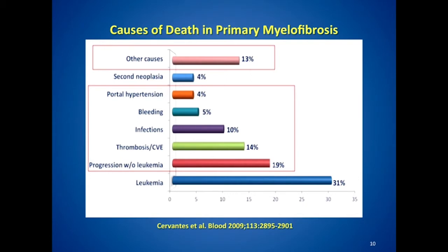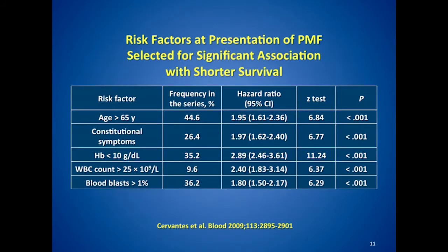How do patients with myelofibrosis die? This was best defined by our Spanish colleagues. The big killers are thrombosis, progression without leukemia, and acute leukemia, accounting for about 31% of patients.